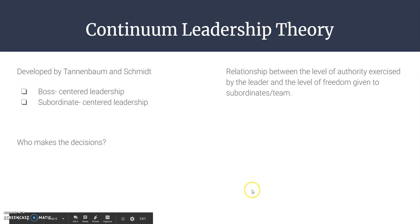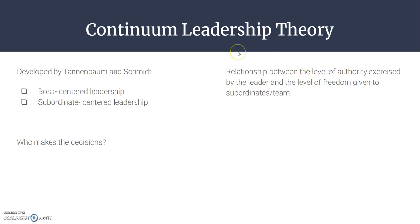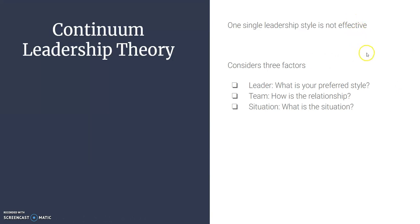The continuum leadership theory was developed by Tannenbaum and Schmidt. It has two styles: boss-centered leadership and subordinate-centered leadership. This theory describes the relationship between the level of authority exercised by the leader and the level of freedom given to the individual or team — essentially, who is making the decisions. It considers three factors: the preferred leadership style, the relationships within the team, and the situational or environmental factors involved.